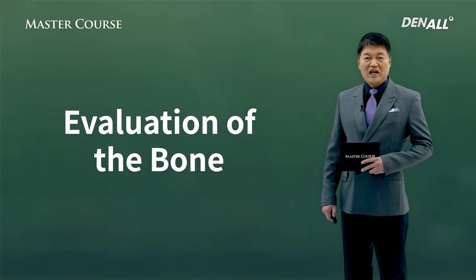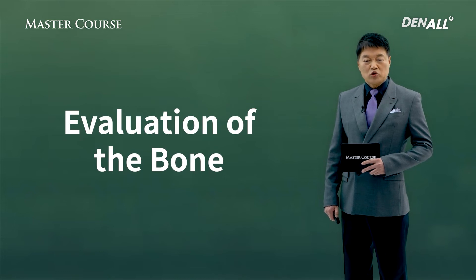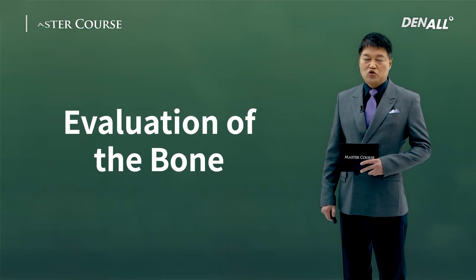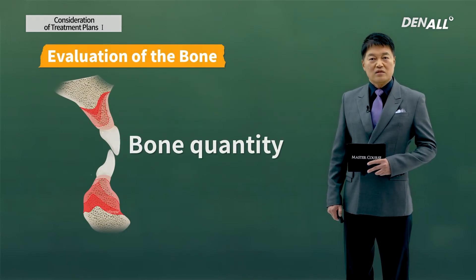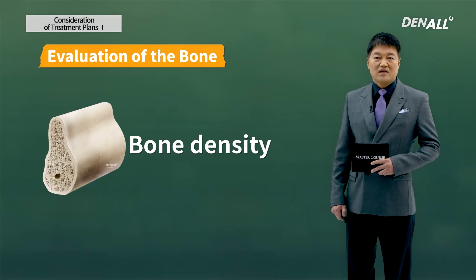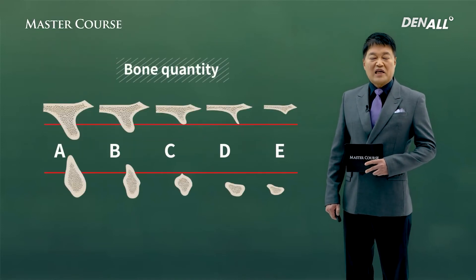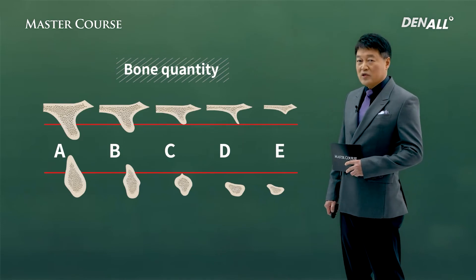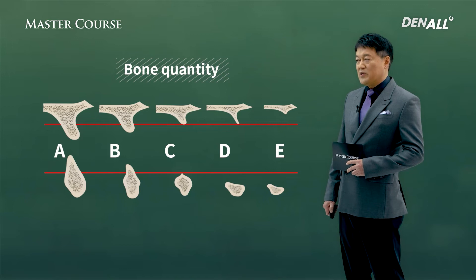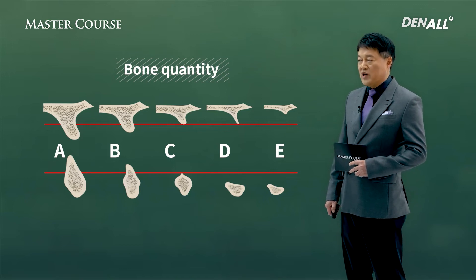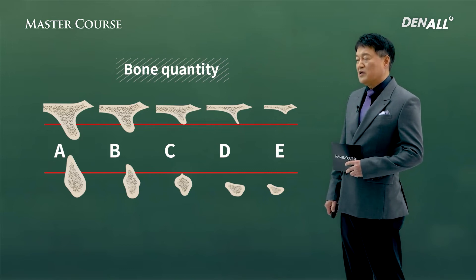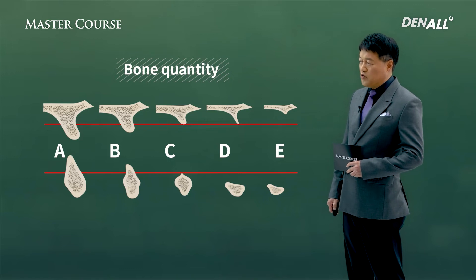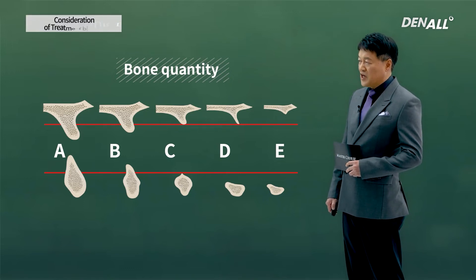Next is evaluation of bone. The implant is placed where bone is and gets adequate stability from there, so bone evaluation is very important. We assess bone quantity and bone quality (bone density). If there is sufficient bone in the area where we're going to place the implant, it will be very easy. However, after extraction bone is often resorbed and not enough remains — we have to overcome many obstacles and may need additional surgery like GBR.